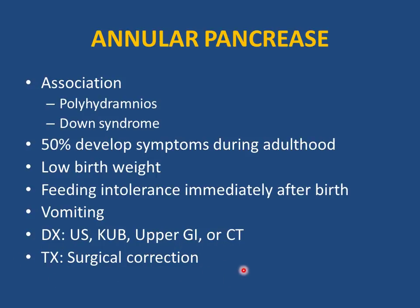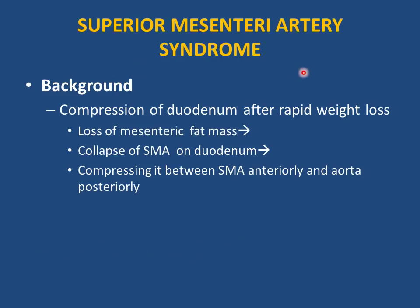Superior mesenteric artery (SMA) syndrome is compression of the duodenum after rapid weight loss. Loss of mesenteric fat causes the SMA to compress the duodenum anteriorly while the aorta compresses it posteriorly. The key to suspecting SMA syndrome is a history of rapid weight loss, such as after surgery or any condition associated with rapid weight loss.